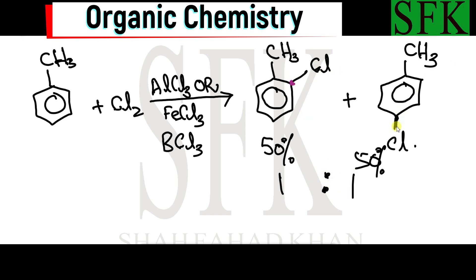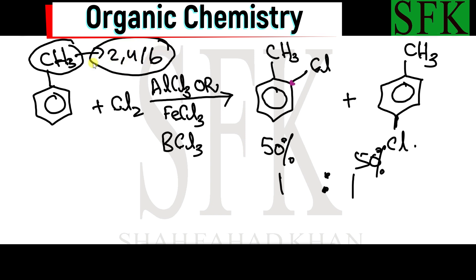Why do we get 2-chloro and 4-chloro, but not 3-chloro? That's because the methyl group is a 2-4-6 director — it is an activating group and an ortho-para director. So basically, 50% of the chlorine positive electrophiles go to the second carbon and 50% go to the fourth carbon atom.